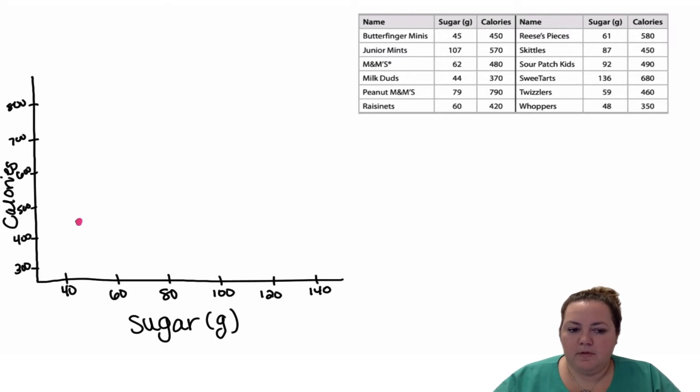Then I'm going to plot the points: 45, 450; 107, 570; 62, 480; 44, 370; 79, 790; 60, 420; 61, 580; 87, 450; 92, 490; 136, 680; 59, 460; and 48, 350. I've plotted all of my points. I've made a scatter plot.